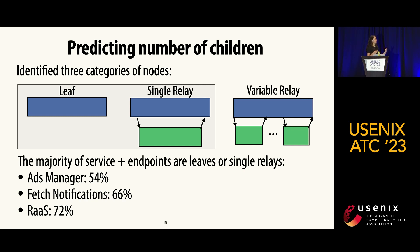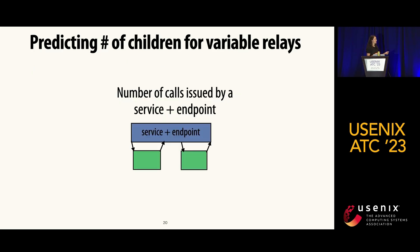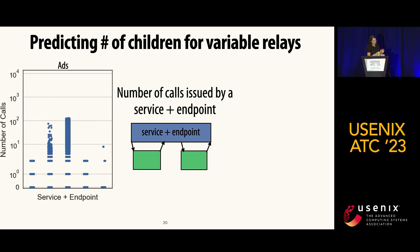We zoomed in on variable relays to understand the behavior of calls to all their children. Looking at specifically the number of calls issued by variable relays, here I show the five most common service-plus-endpoints in the Ads traces on the x-axis, with one series for each.